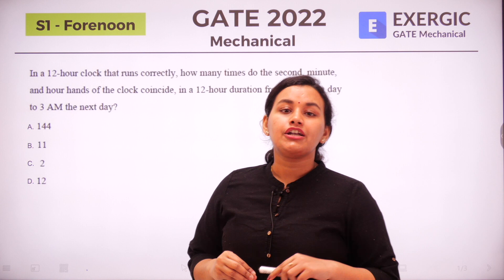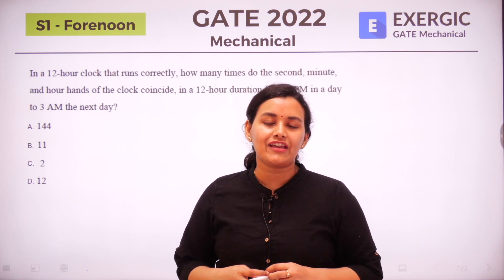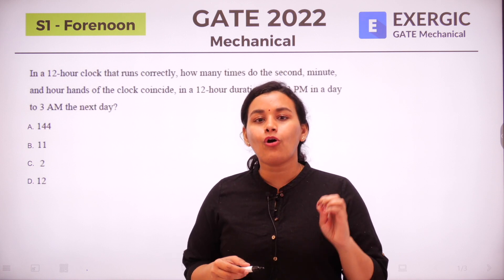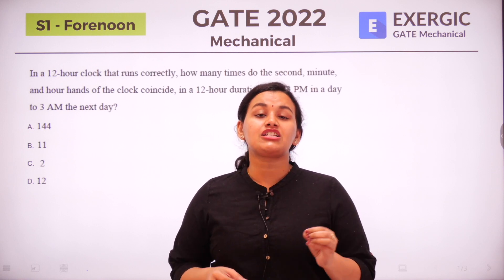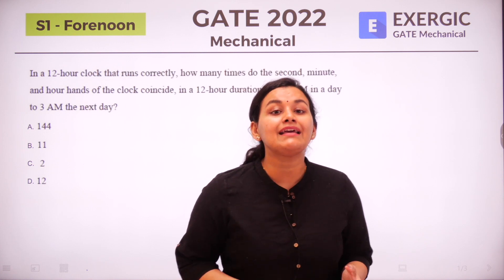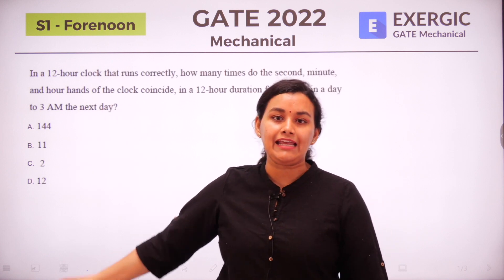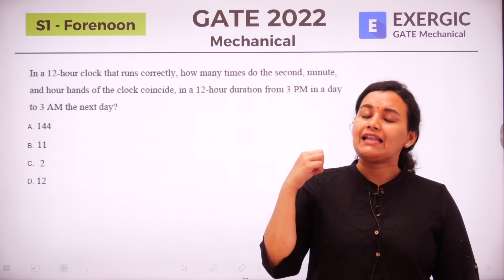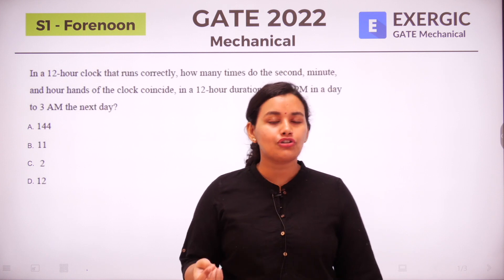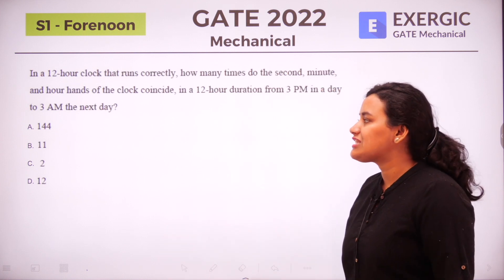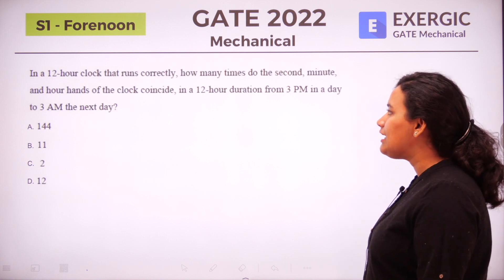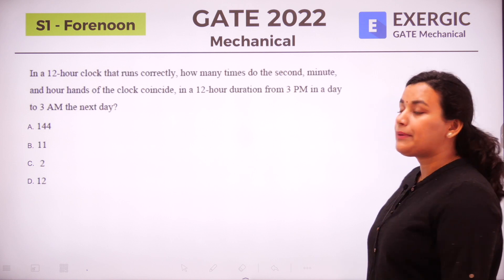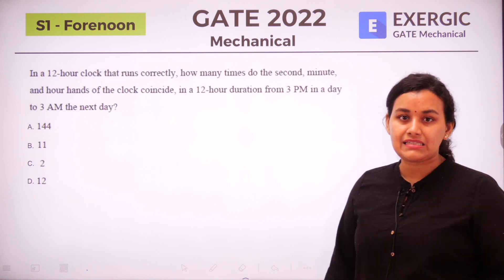Hello everyone, welcome to today's lesson. Today we are going to look at a very interesting question asked in the general aptitude section in GATE 2022 — the question of the overlapping of the hands of a clock. The question asks: in a 12-hour clock that runs correctly, how many times do the second, minute, and hour hand coincide in a 12-hour duration from 3 PM to 3 AM the next day?